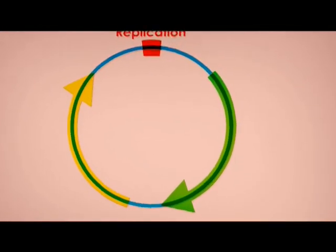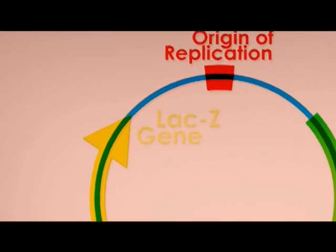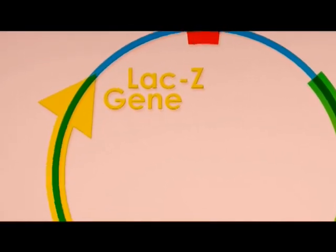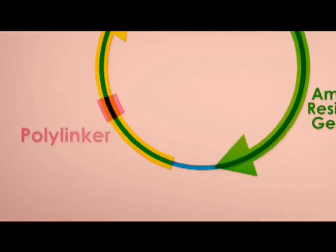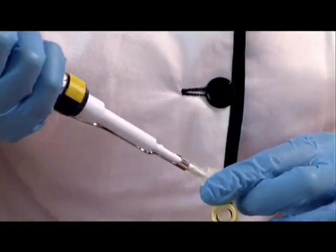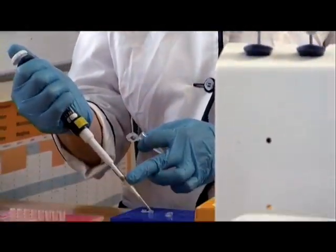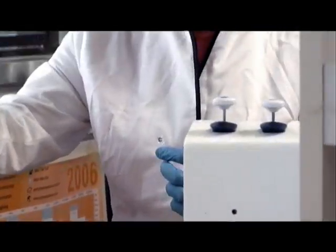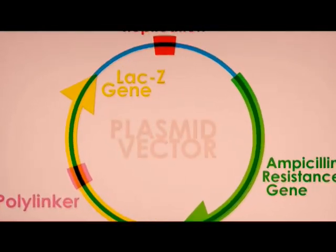One gene confers antibiotic resistance, often to ampicillin. The other gene, called lacZ, will allow a bacterium to metabolize a chemical called X-Gal. The final element is a site where donor DNA can be inserted. This is a short stretch of sequence that contains several restriction enzyme recognition sites and is called a polylinker. The polylinker is inside the lacZ gene, but by itself will not affect the expression of lacZ. However, if a piece of DNA is inserted into the polylinker, the lacZ gene will be disrupted. Through the interaction of these elements, we are able to select the clones that we want. We refer to these modified plasmids as vectors.